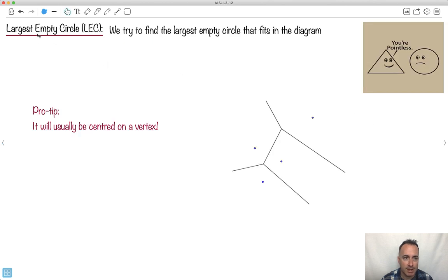So let's take a look here. We're going to do this LEC. It's called the largest empty circle. We do want to try to find the largest empty circle that fits in the diagram. And here's a pro tip for you. It's almost always going to be centered on a vertex. So what do I mean by this? I'll show you.